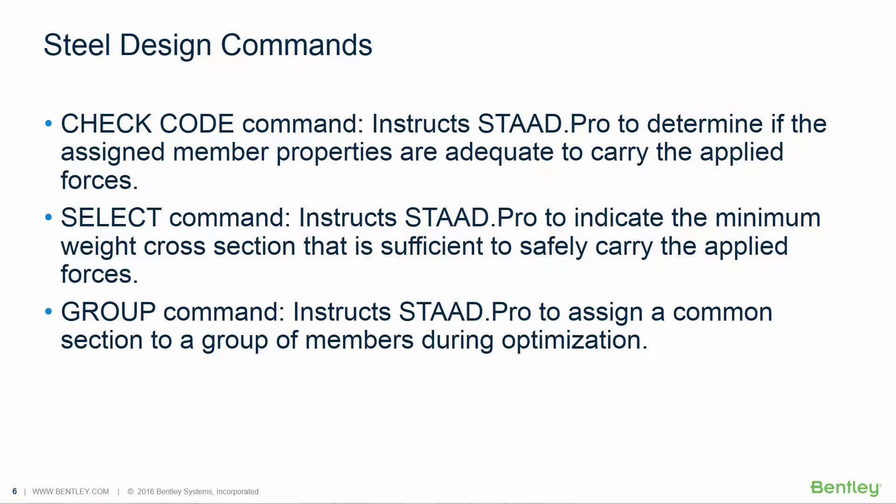In STAAD Pro you can specify several different types of commands to analyze and design steel structures. The command we're focusing on in this course is the check code command, which instructs STAAD Pro to determine if the assigned member properties are adequate to carry the applied forces. We also provide a select command — which indicates the minimum weight cross-section sufficient to safely carry the applied forces — and a group command, which assigns a common section to a group of members during optimization.